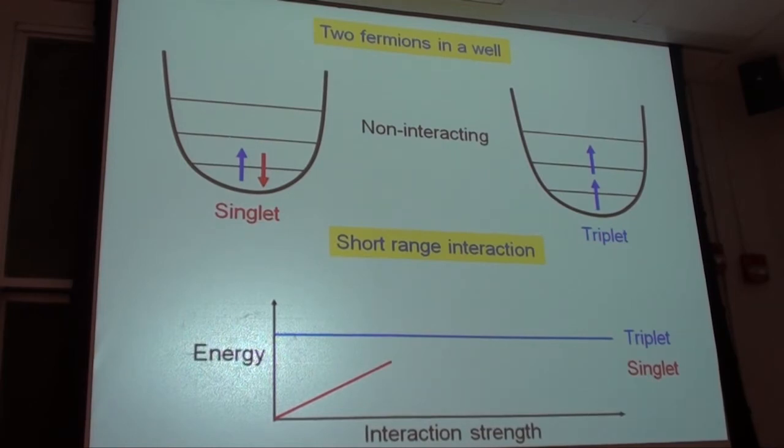If you now add short-range interactions, the two identical fermions cannot come at short range. As a function of interaction strength, the triplet state is not changing in energy, whereas the singlet state in perturbation theory has a linear shift. And now you would say, okay, well, wait a moment, and then eventually the triplet state will have lower energy. But what happens is...